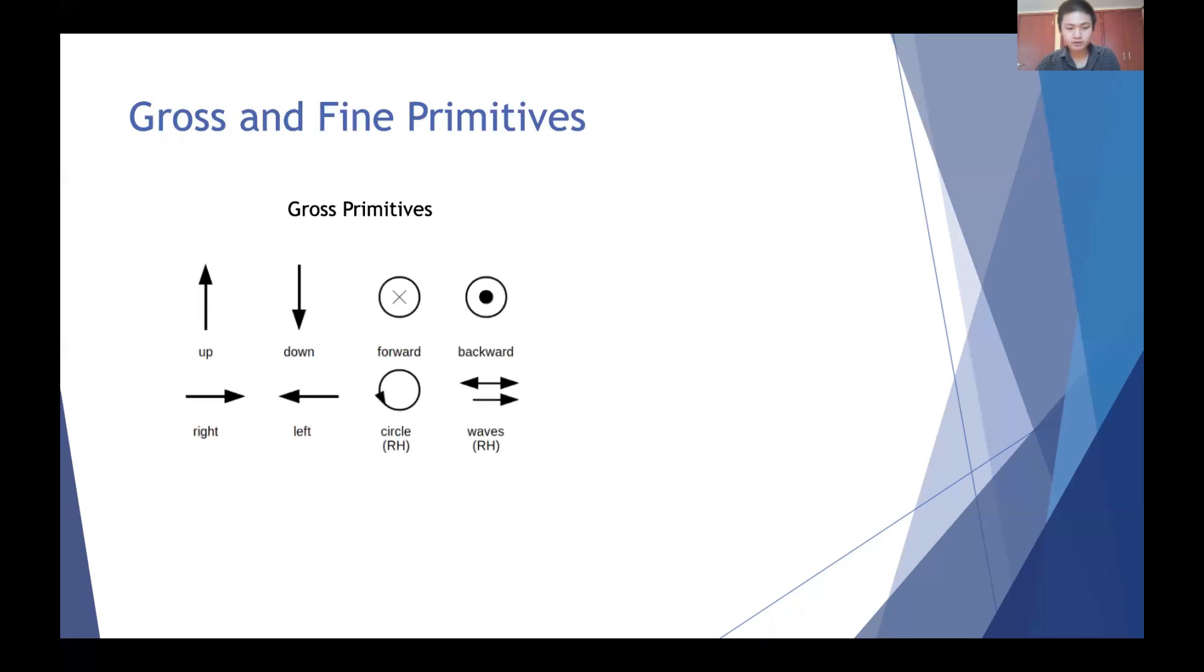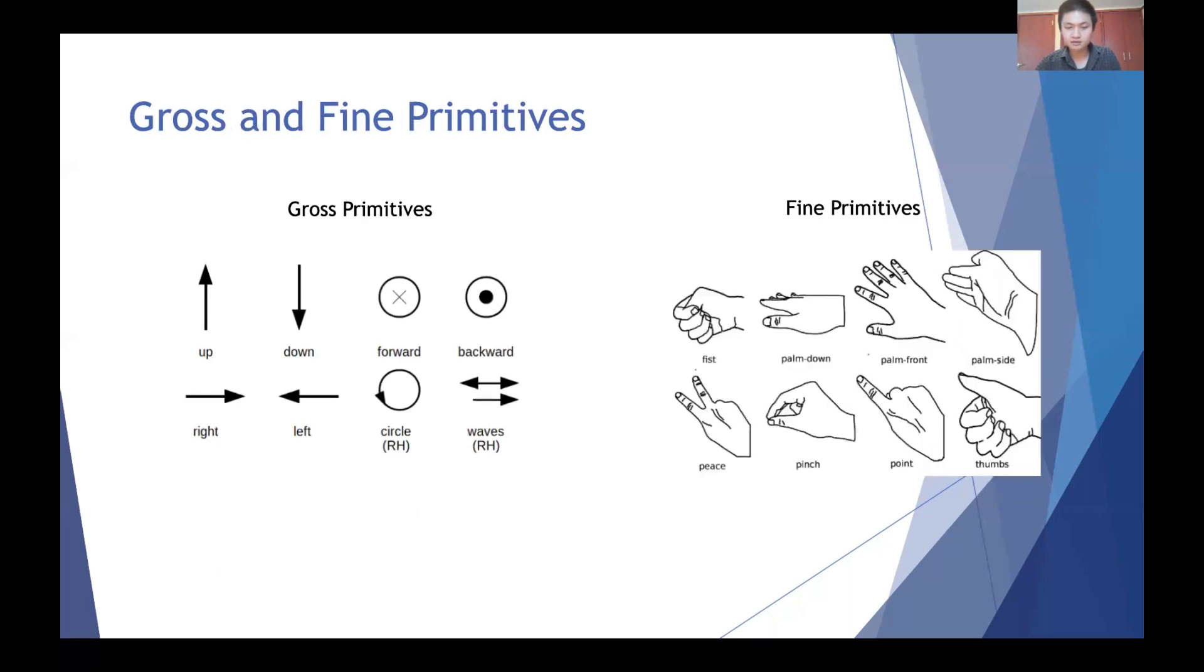For our script, we first divided hand gestures into two separate components: the gross component, which is the motion of the center of mass of the hand, and the fine component, which consists of the movement of the fingers. For example, gross gestures include forward and right, and fine gestures include thumbs up and pointing. We termed these gestures as primitive gestures.